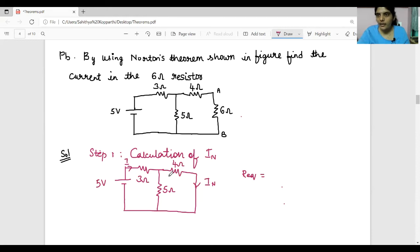So R equivalent will be 3 plus parallel formation of 5 and 4. So it is 3 plus 5 into 4 divided by 5 plus 4. So we get 5.22 ohm.